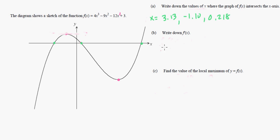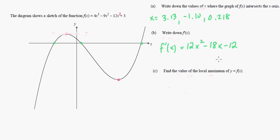Now find the derivative of f(x). We're going to do 3 times 4, which is 12, and take 1 away from the exponent, so it's x squared. Then 2 times negative 9 is negative 18, and take 1 away from the exponent, so it's just x. If it's just x by itself, 1 times negative 12 is just negative 12. And the constant becomes 0. So our derivative is 12x² − 18x − 12, which gives us the gradient of the tangent line at any point on the function.